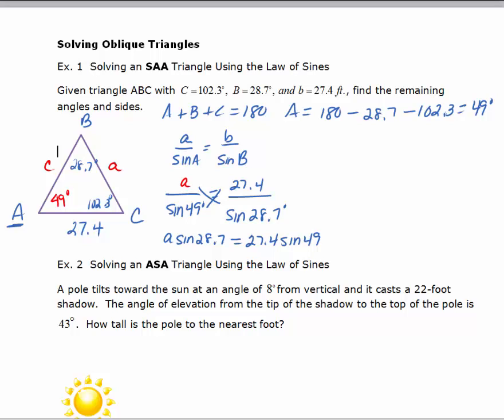Now to solve for a, I'd have to divide both sides by 28.7. So dividing both sides by that 28.7 gives us a equals 27.4 times the sine of 49 degrees divided by the sine of 28.7 degrees.